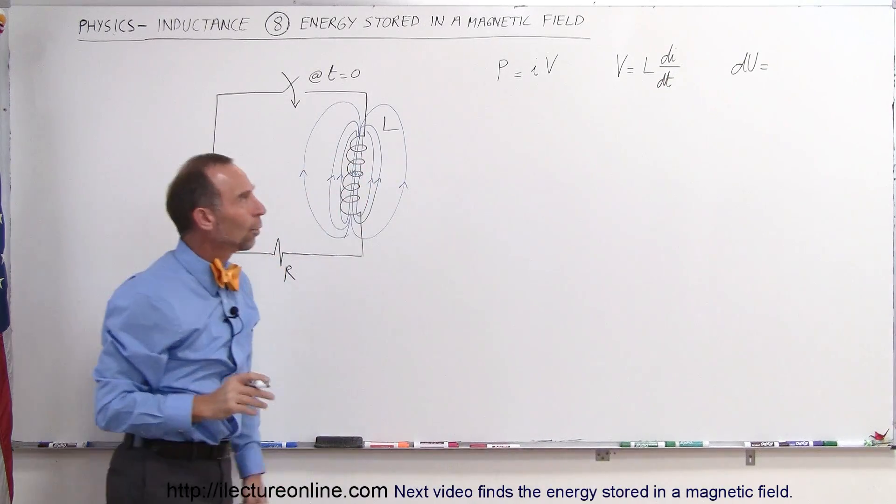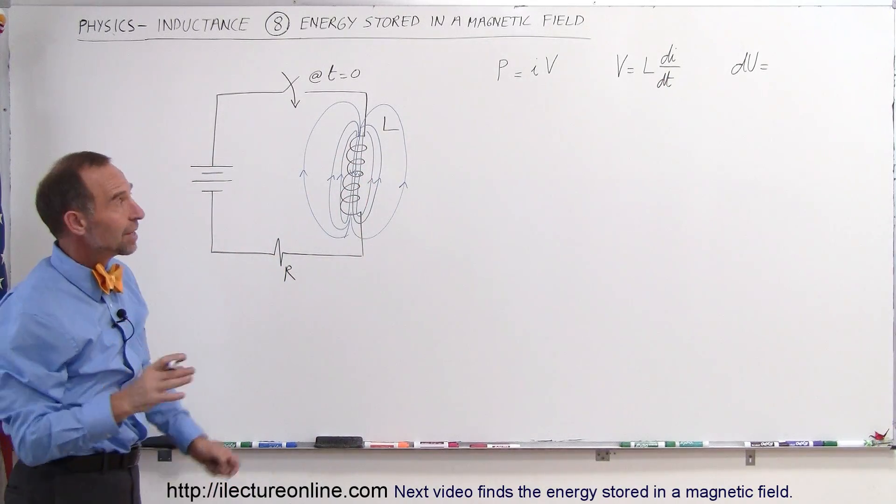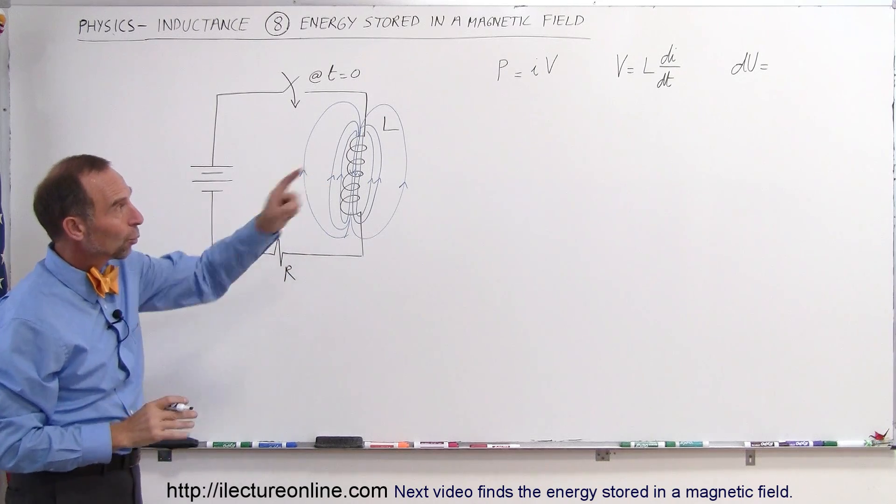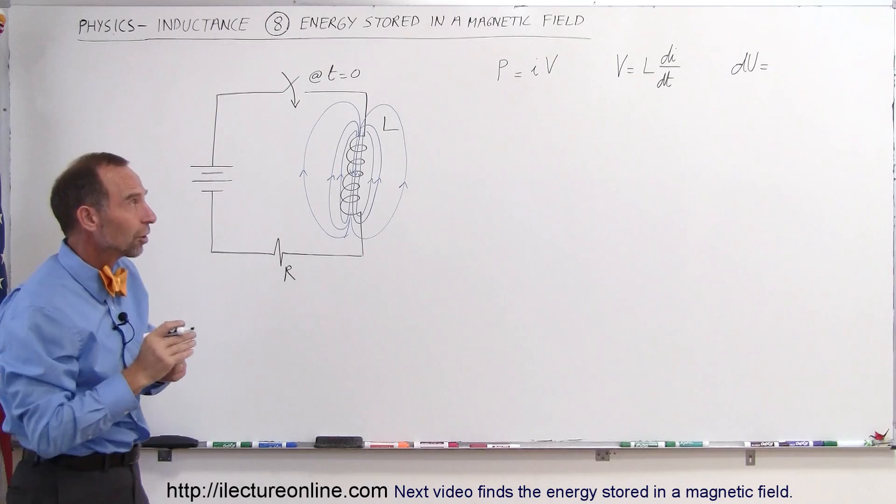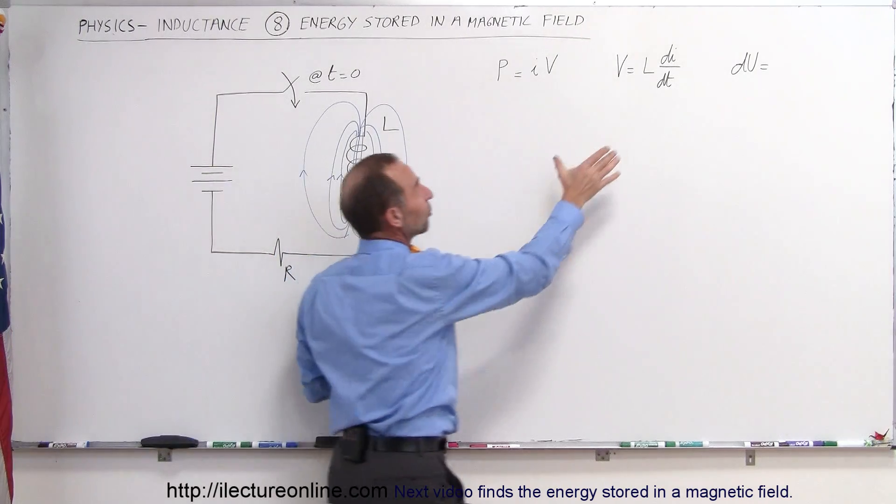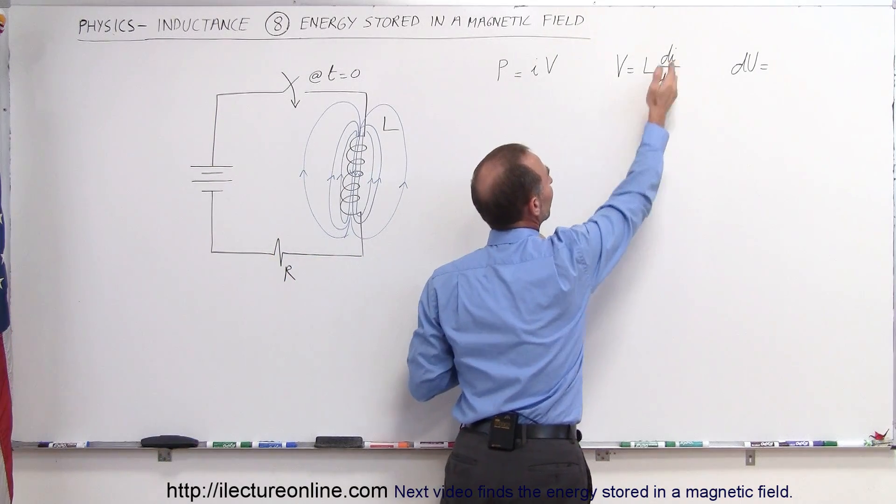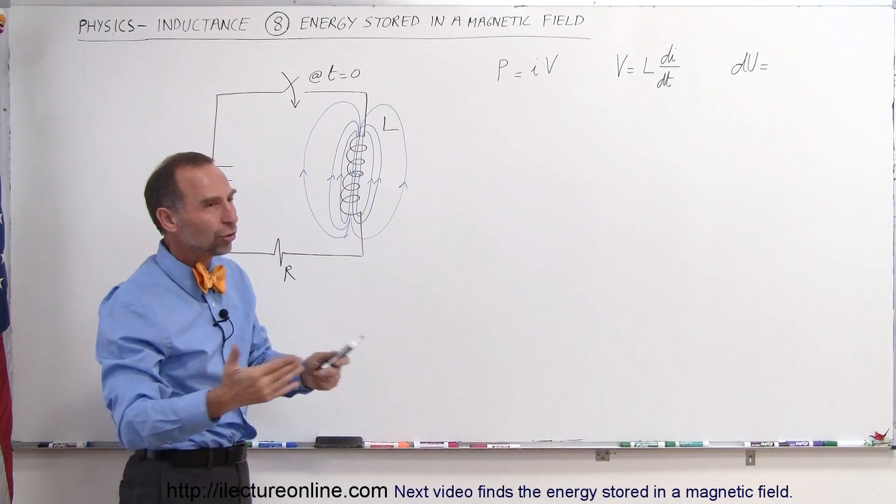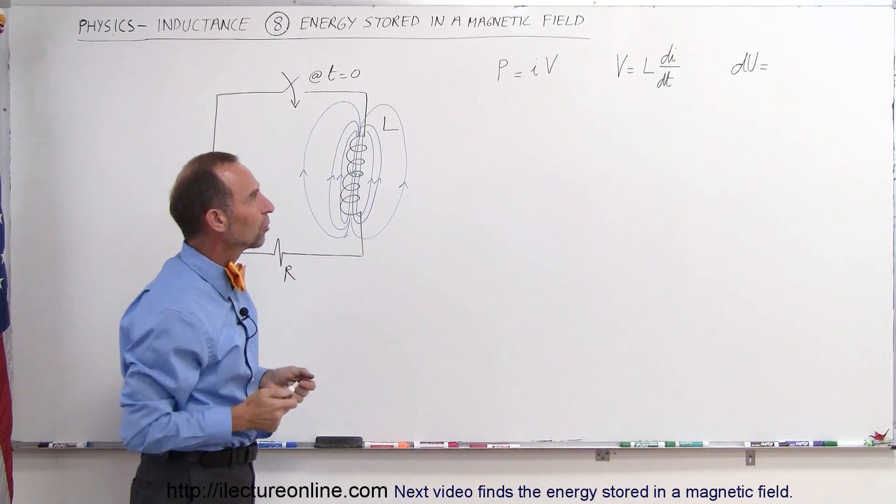All right, so what we can do then is we can say, well, that means that if we replace the voltage inside our power equation with what the voltage will be across the inductor. Now, remember, you only have voltage across the inductor if there's a change in the current. As soon as we reach steady state current, the potential, the voltage difference across the coil goes to zero.